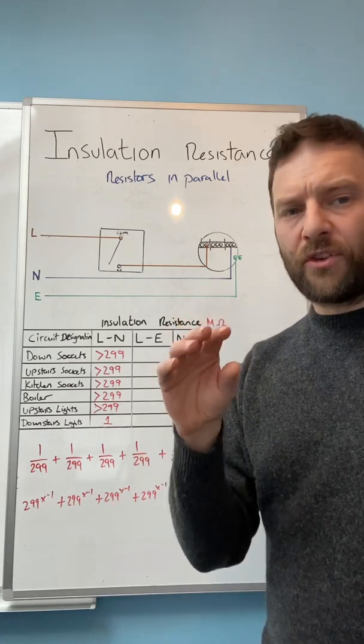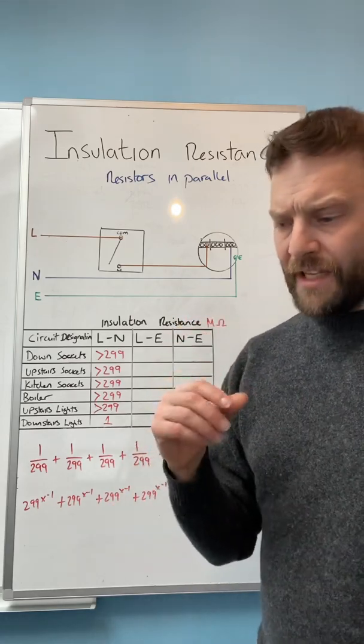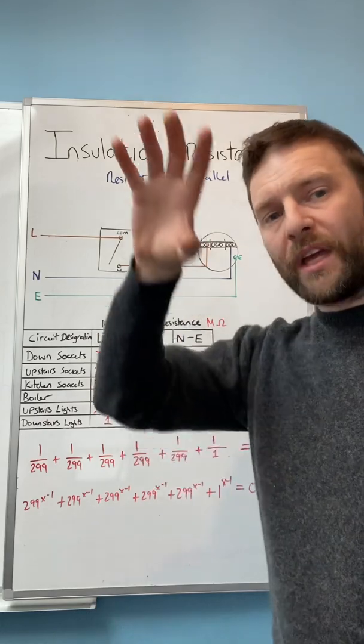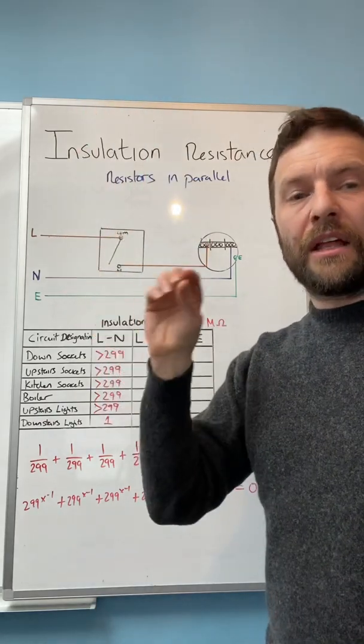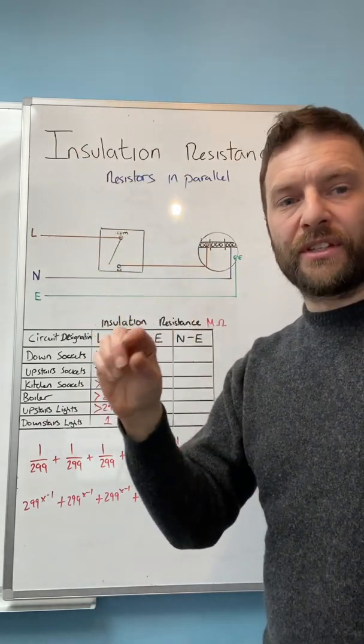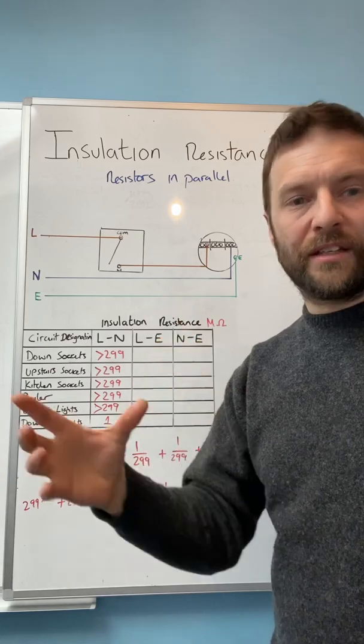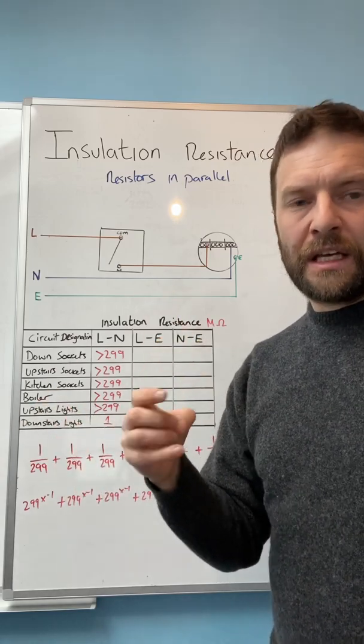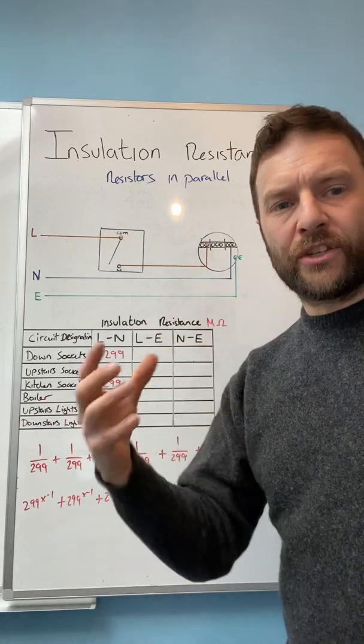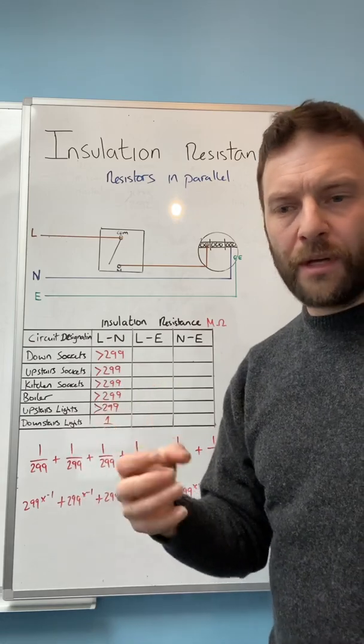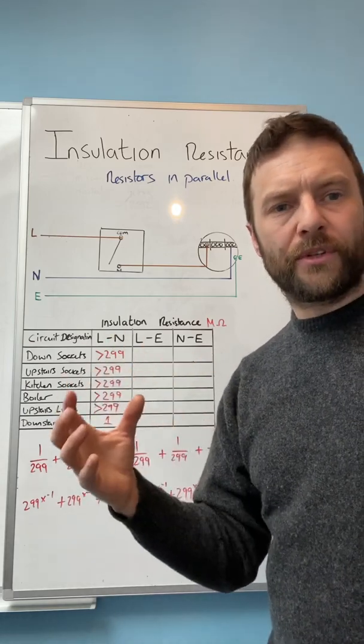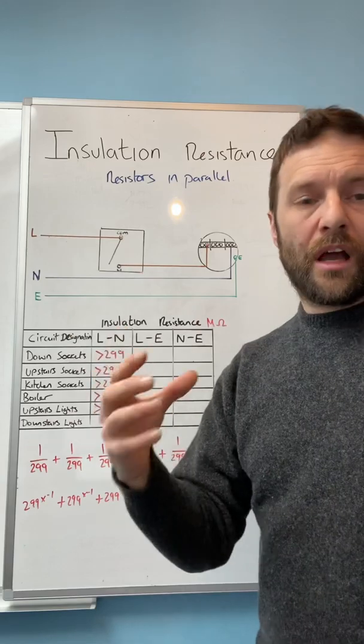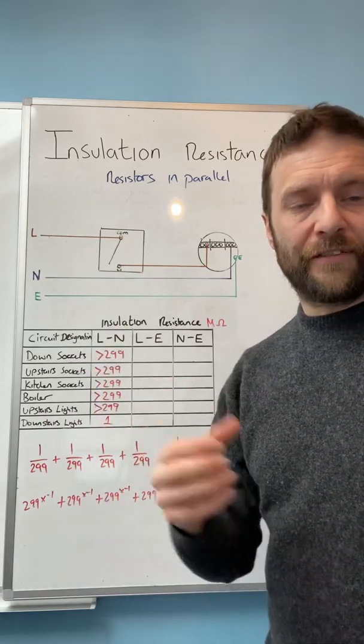Now what that's actually saying if you read it carefully is that the whole installation should have a minimum insulation resistance of one mega ohm on an existing installation. Now they've changed that slightly for an initial verification, they've made it 20 mega ohms for a new installation should be looked at if it's anything less than that.